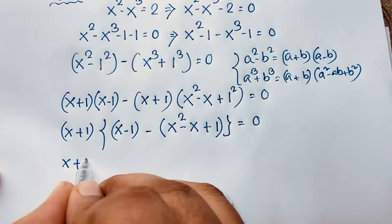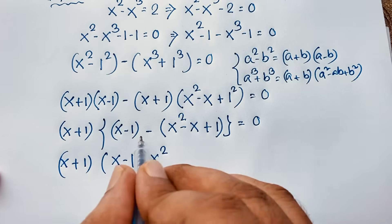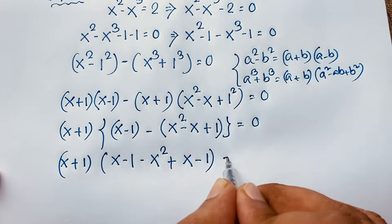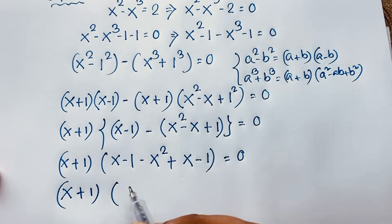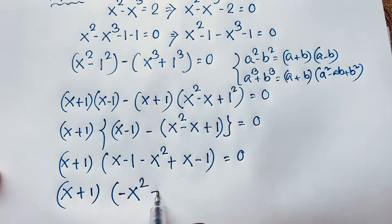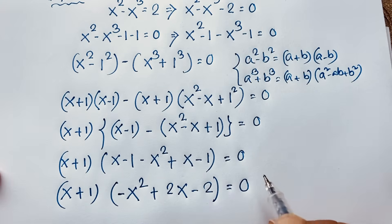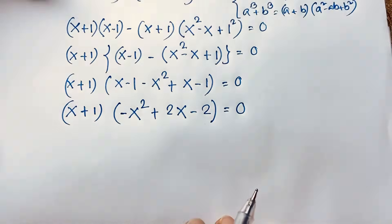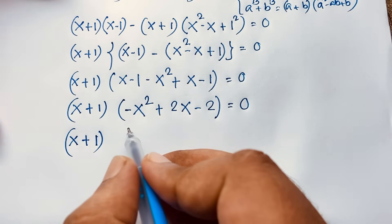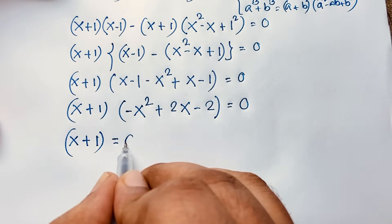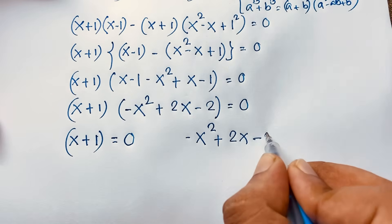Then here, x plus 1 times, it will be x minus 1 plus or minus minus x squared. Minus minus will be plus x. And plus minus will be minus 1 — is equal to 0. Now x plus 1 times: this is negative x squared, but x plus x will be 2x, minus 2 is equal to 0. Minus 1 minus 1 will be negative 2. We will find out 2 cases. In the other case, it will be minus x squared plus 2x minus 2 is equal to 0.